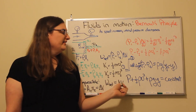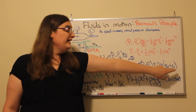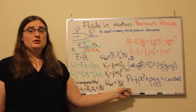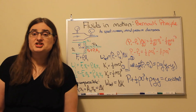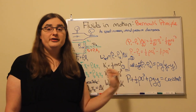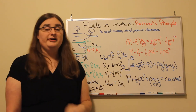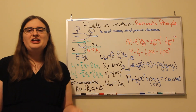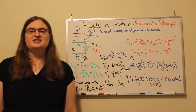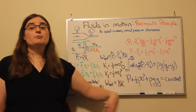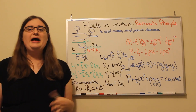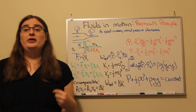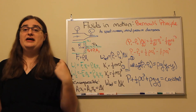Putting it all together: pressure could change because kinetic energy density changes, or because potential energy density changes. The full Bernoulli's equation states that the pressure plus the kinetic energy density — one-half times the density times the speed squared — plus the potential energy density — density times the strength of gravity times the elevation of that fluid — is equal to a constant. That is the total Bernoulli's equation for explaining what happens as fluids are in motion, when we combine it with the idea of continuity, where area times speed has to remain constant.